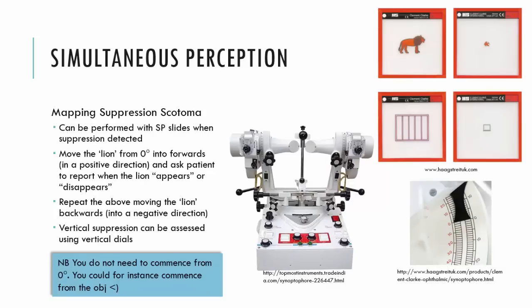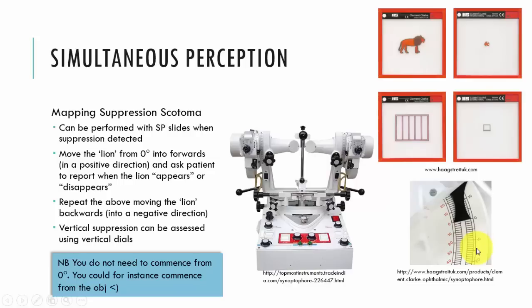We can also measure or map the suppression scotoma when utilising the simultaneous perception slides. If a patient cannot see one of the slides, this indicates suppression is present. What we can do is map the area where the patient can only see one slide versus the areas where the patient can see both slides. So if here at zero the patient sees only the cage and cannot see the lion, I'd move the lever forward until the patient tells me the lion appears, then go backwards and ask when the lion appears again. The area where the lion is absent is the suppression scotoma. A subsequent video will show how we map that suppression scotoma on the projection diagram.